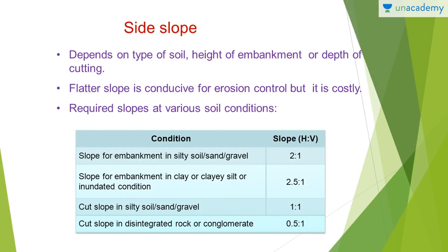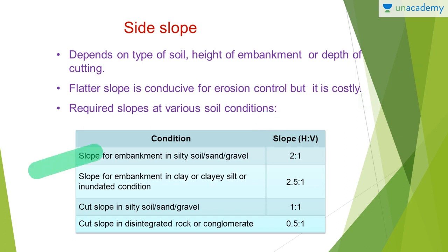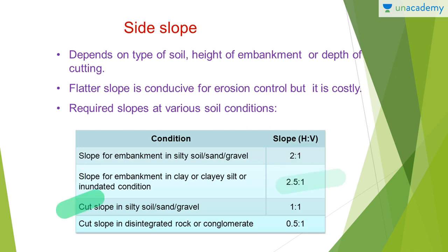Next, you have the side slope. Side slope depends on the type of soil and the height of embankment or depth of cutting. A flatter slope is conducive for soil erosion control but is costly. The required slopes at various soil conditions are: embankment in silty soil, sand or gravel — 2:1; embankment in clay, clayey silt or inundated condition — 2.5:1; cut slope in silty soil, sand or gravel — 1:1; and cut slope in disintegrated rock or conglomerate — 0.5:1.